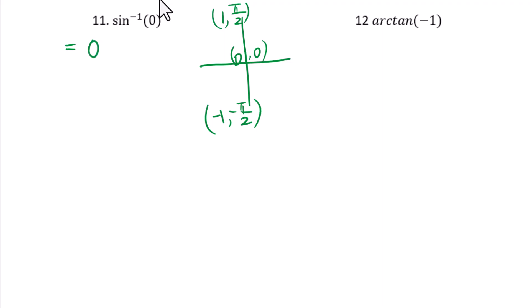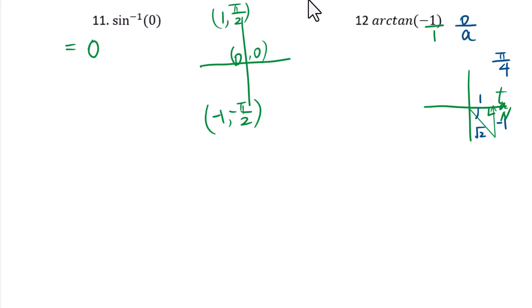Question 12: arc tangent of negative 1. We write this as negative 1 over 1. Since this is negative, go to the fourth quadrant for tangent. With side lengths negative 1 and 1, the hypotenuse is square root of 2, giving a reference angle of pi over 4. In the fourth quadrant, the pattern is negative pi over n, so the answer is negative pi over 4.